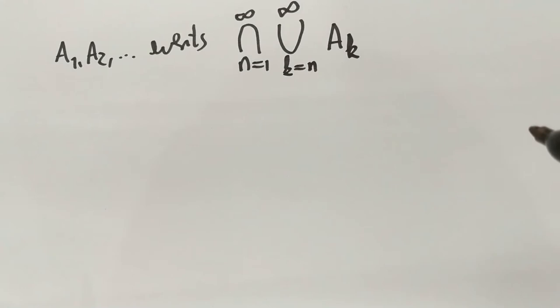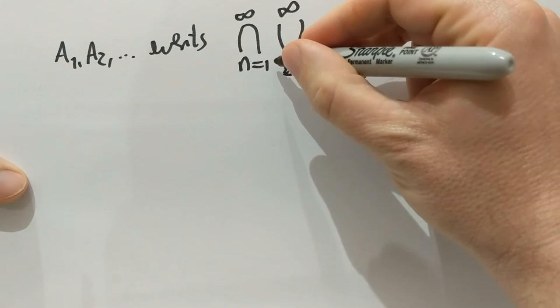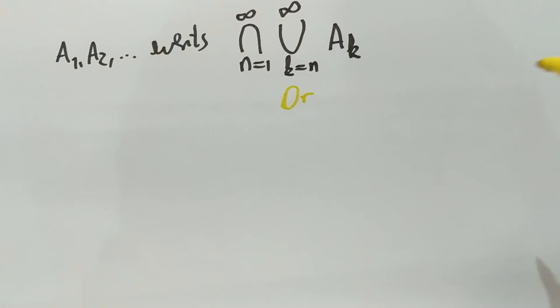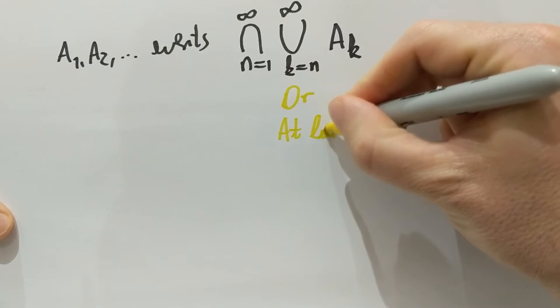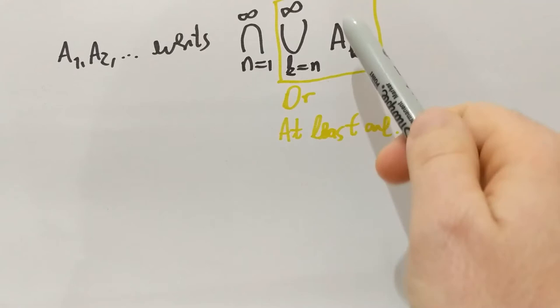So what does this mean and why is this interesting? The union always means OR. Union always means in probability OR, or at least one. That's what a union means. So what is the union of the AKs starting from n? Well, that will mean at least one of the AKs from index n occurs.